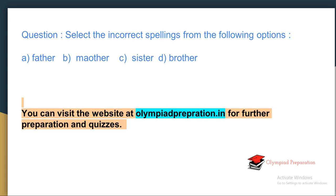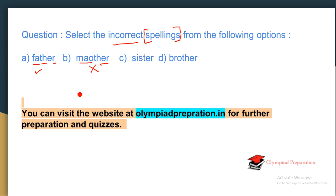Next: select the incorrect spelling from the following options. Your vocabulary must be strong and you must understand how spellings are formed. Options: Father — correct. Mother — incorrect, it should be spelled M-O-T-H-E-R. Sister — correct. Brother — correct. So the incorrect answer is the misspelled option for 'mother.'